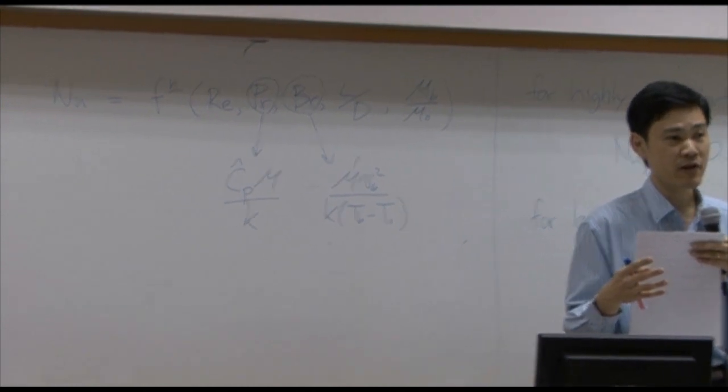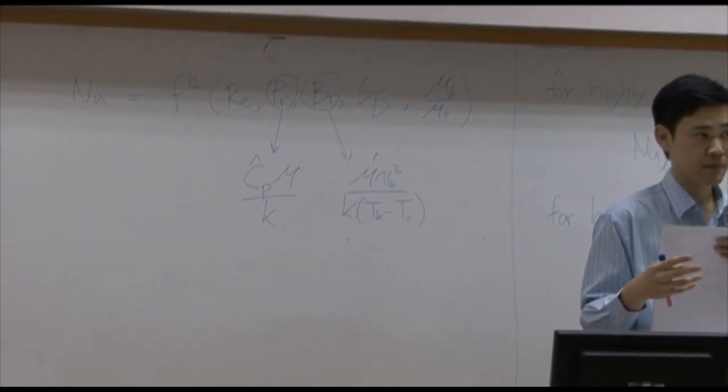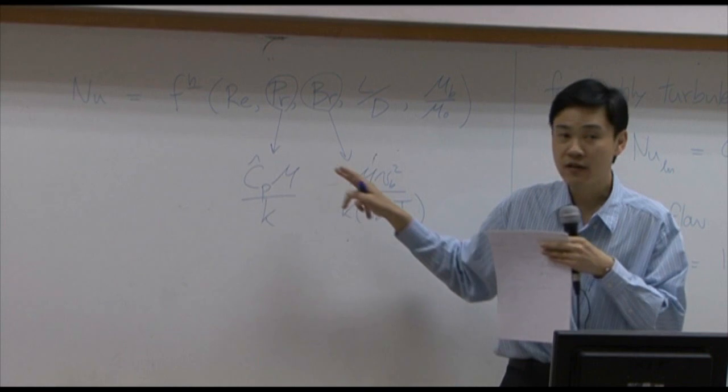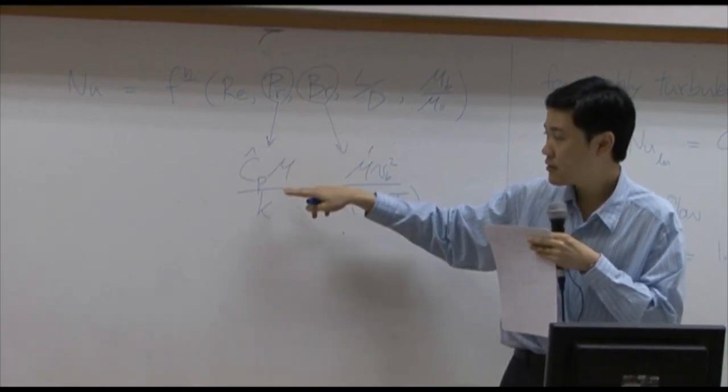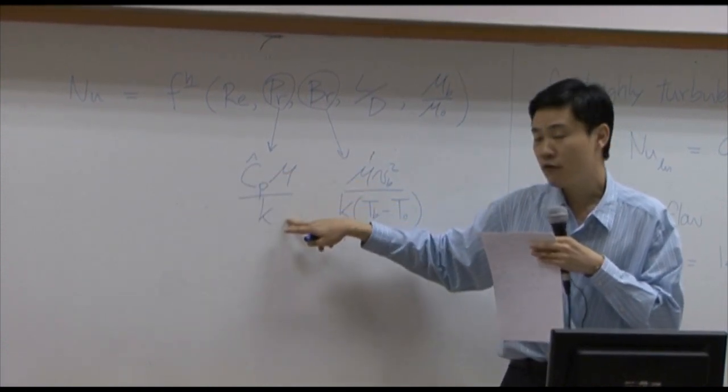Prandtl number sometimes or most of the time would appear whenever you have convection. It is a function of fluid only. You can write down Prandtl number as Cp mu over K.